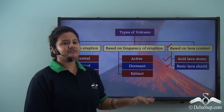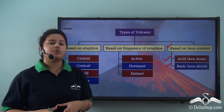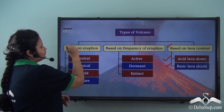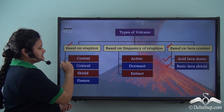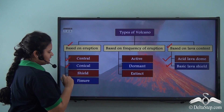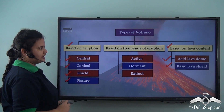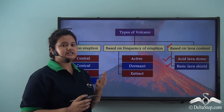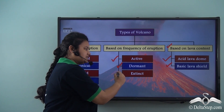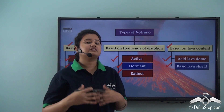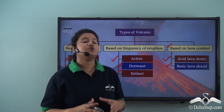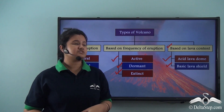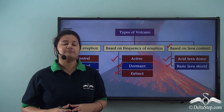Here is the summary chart on classification of volcanoes. Volcanoes can be classified based on how they erupt — into central, conical, shield, and fissure types. Based on frequency of eruption — into active, dormant, and extinct. And based on composition of lava — into acid lava dome and basic lava shield. In our next video, we will study more about volcanoes.